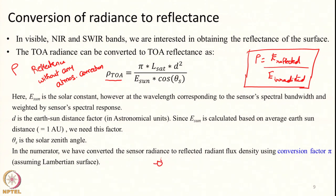First we will calculate what is on the denominator — that is, the radiant flux density on the surface. In the short-wave wavelengths (lambda less than 3 micrometers), the sun is the primary source. In previous lectures I told you that for each wavelength band — say 0.4 to 0.5, 0.9 to 1.1, and so on — we will be able to calculate what will be the energy from the sun that reaches the top of atmosphere.